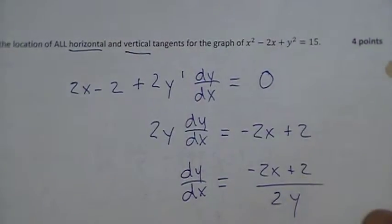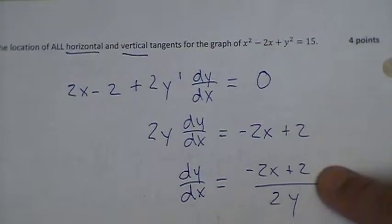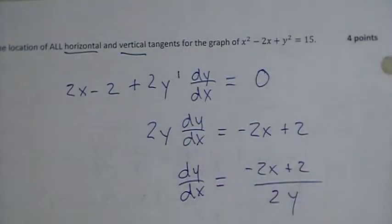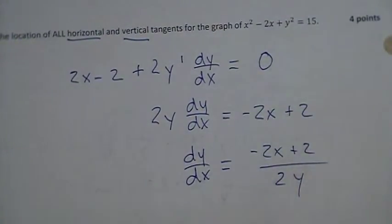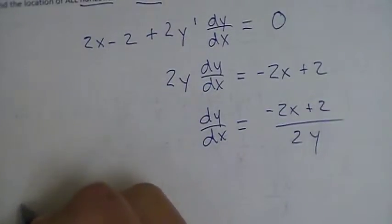A fraction can only ever be 0 if the top is 0 while the denominator is non-zero. So I want to figure out when my numerator is 0 to find where I have horizontal tangents.